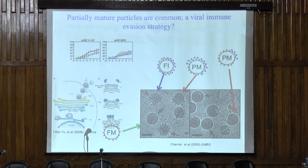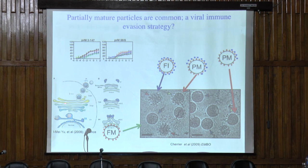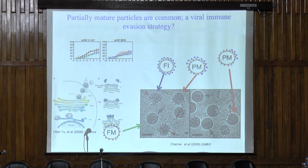The virus is produced in the cell, it buds into the ER, then passages through the Golgi. In the Golgi, it gets exposed to an acidic pH — exactly what happens when it enters its target cell. There's a danger in the Golgi that it might conformationally change and fuse inside the cell before being released. To prevent that, the precursor membrane protein chaperones the fusion loop of the envelope protein so it cannot interact with host membranes inside the cell until it gets out.